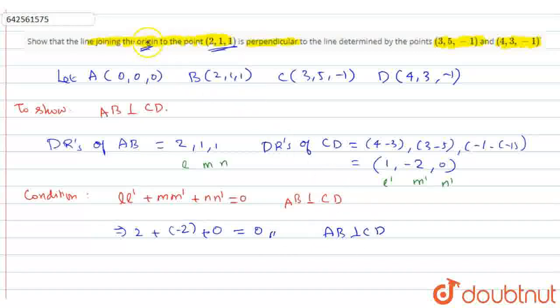That means the line joining from the origin to the point (2, 1, 1) is perpendicular to the line determined by (3, 5, -1) and (4, 3, -1). Thank you.